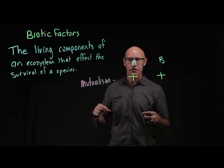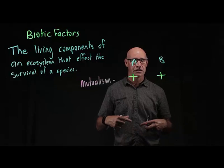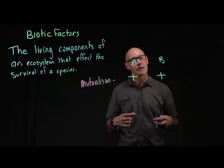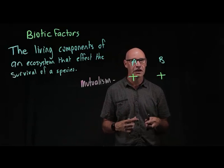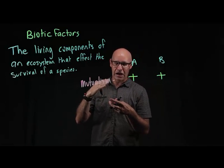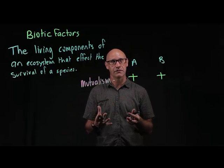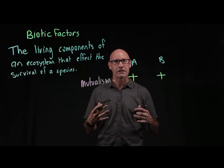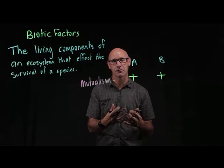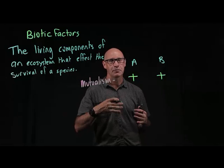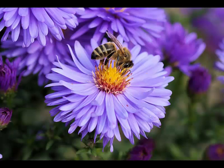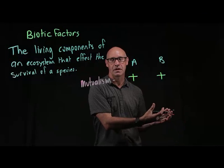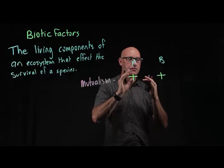A great example is the bacteria that live inside the stomachs of cows. Those bacteria are able to break down the cellulose in grass. The bacteria benefit from having somewhere to live and a ready supply of cellulose, and the cows benefit because the bacteria breaks down that cellulose so they can extract the nutrients. Another example is the bee and the flower — the bee benefits by getting nectar to make honey, and the flower benefits because the bee is the pollinator. So with mutualism, both species benefit.